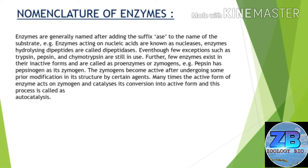Further, a few enzymes exist in their inactive forms and are called proenzymes or zymogens. For example, pepsin has pepsinogen as its zymogen. The zymogen becomes active after undergoing some prior modification in its structure by certain agents. Many times the active form of the enzyme acts on the zymogen and catalyzes its conversion into active form — this process is called autocatalysis.